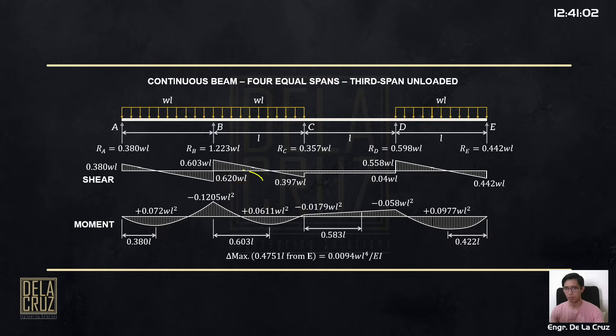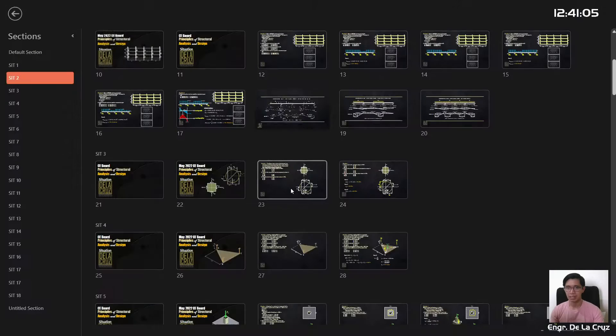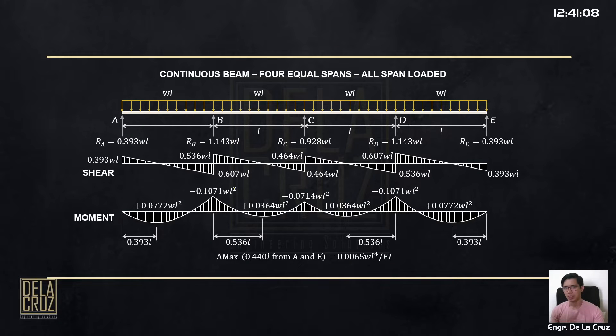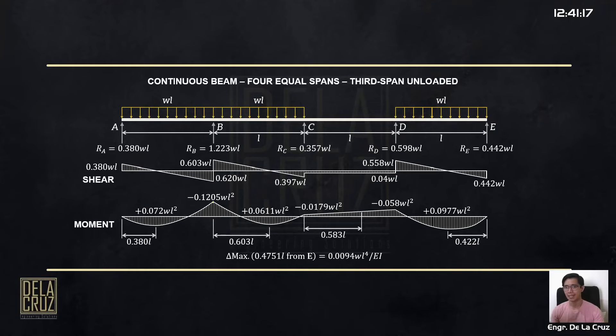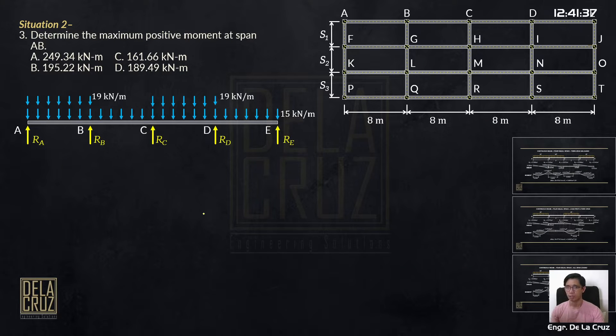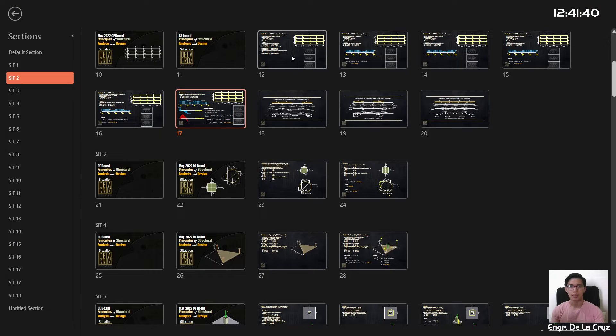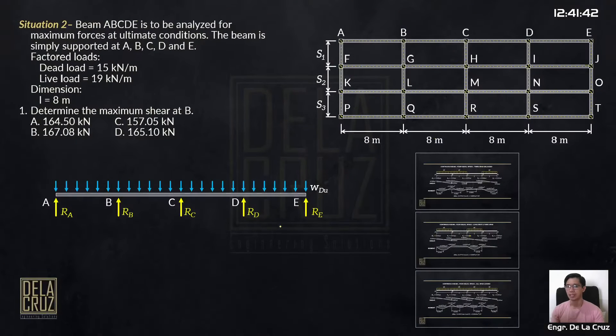Tingnan natin yung second diagram. It is 0.554 only. Kanina, 0.607WL pag present yung live load sa lahat. So mas lamang pa rin yung complete yung ating load. Now, tingnan natin yung previous. Pinakauna diagram. At B, shear at B. We have here 0.620. Ito, 0.603. So of course, mas malaki yan.